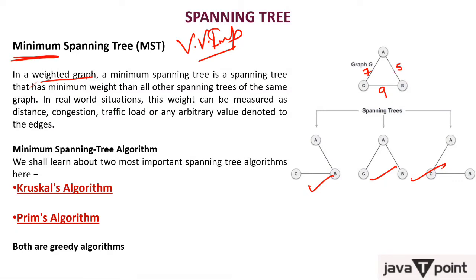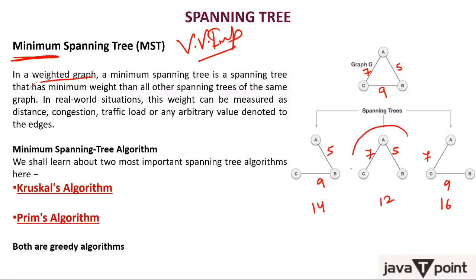Which is the minimum spanning tree? Tree A uses edges with weights 5 and 9, total 14. Tree B uses 7 and 5, total 12. Tree C uses 9 and 7, total 16. So the minimum spanning tree is Tree B with total weight 12. A minimum spanning tree is the spanning tree that has minimum weight among all other spanning trees.